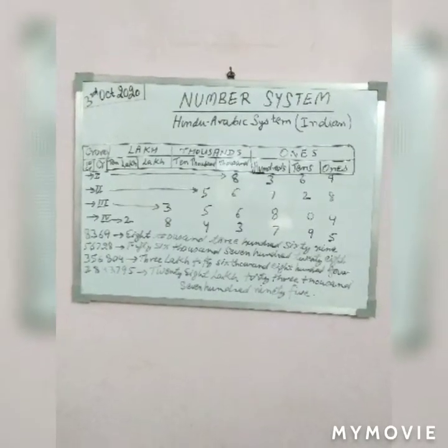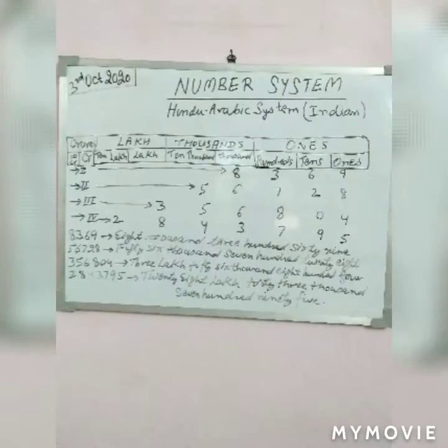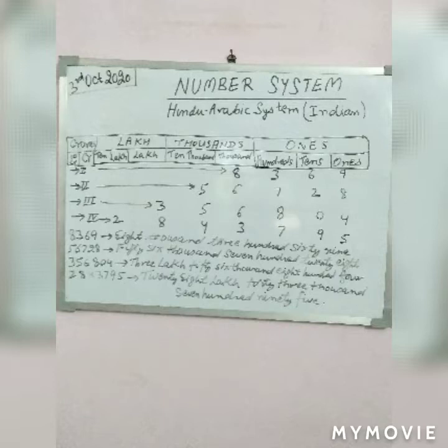When we write a number in figures, it is called notation. When we write a number in words, it is called numeration. In the Hindu Arabic system, we use 10 symbols: 0, 1, 2, 3, 4, 5, 6, 7, 8, 9. And these are called digits or figures to represent any number.